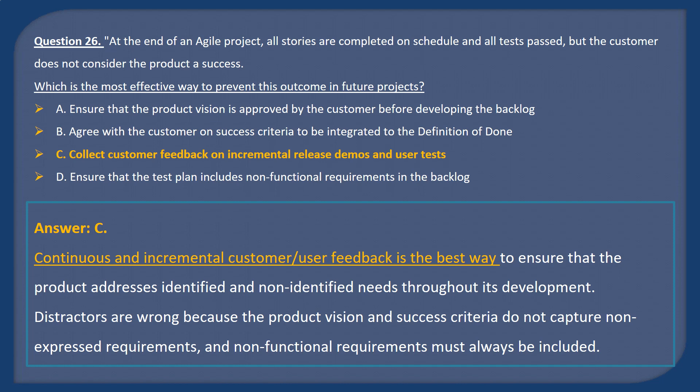Answer C. Continuous and incremental customer or user feedback is the best way to ensure that the product addresses identified and non-identified needs throughout its development. Distractors are wrong because the product vision and success criteria do not capture non-expressed requirements, and non-functional requirements must always be included.